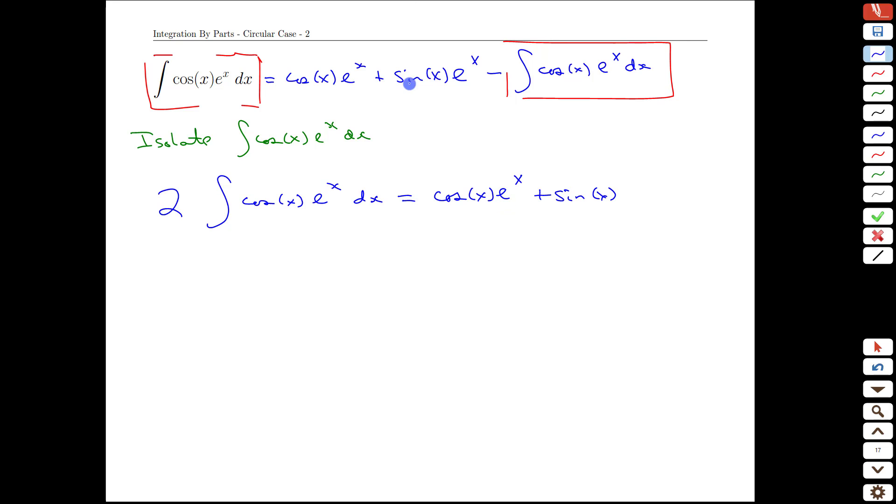As long as we don't forget to put all the ingredients back in. Cos(x) e^x, plus sine(x) e^x. And in the next line we see our final result. What is equal to the integral of cos(x) e^x? Well, it happens to equal cos(x) e^x, plus sine(x) e^x, all over 2.